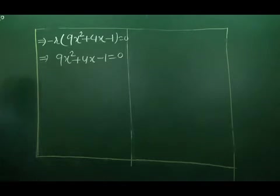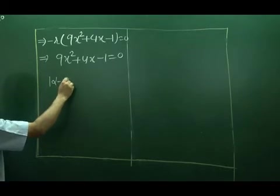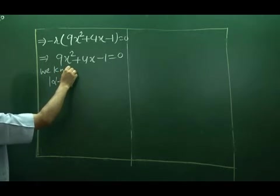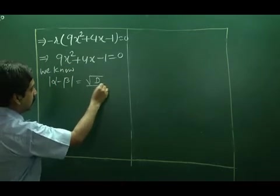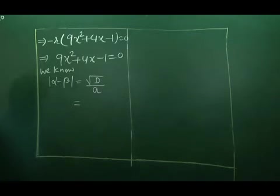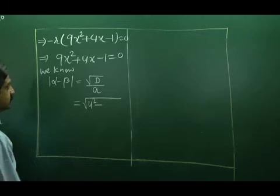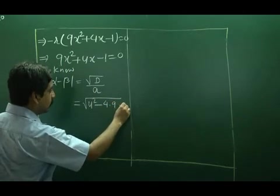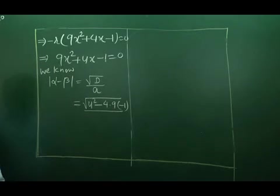Now, come to the last point. We have to find mod alpha minus beta, and we know mod alpha minus beta is root over D by A. Here, D is 4 square minus 4AC means 9 into minus 1, divided by A which is 9.